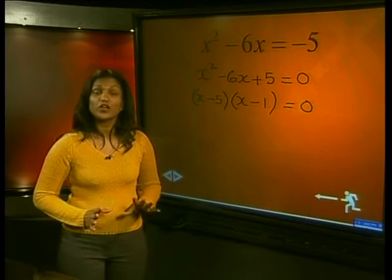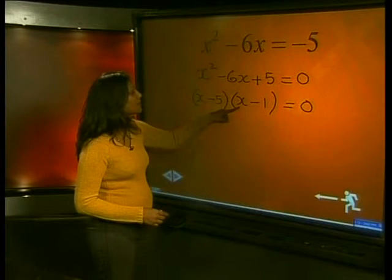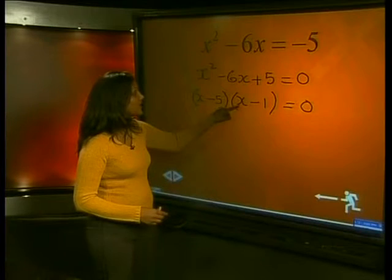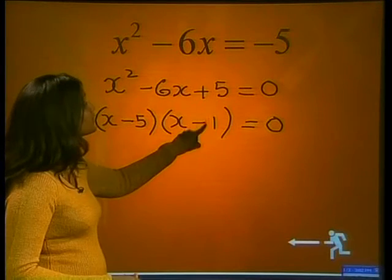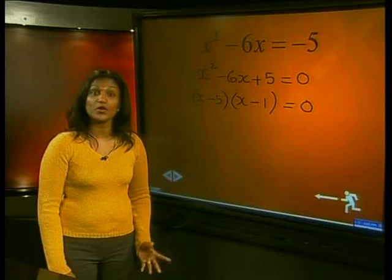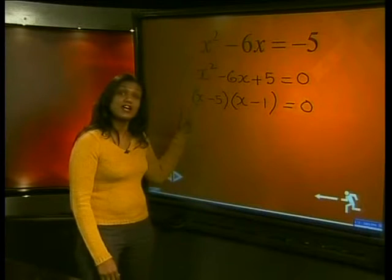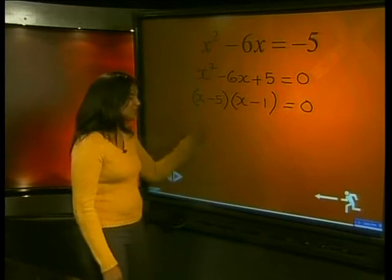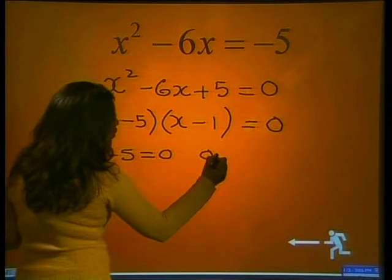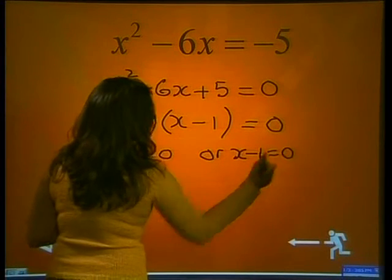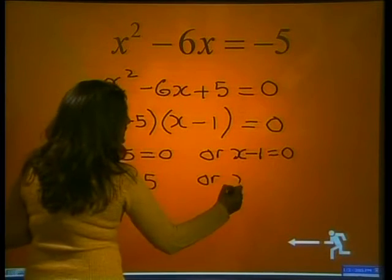You should always check when you've factorized. Multiplying out the brackets: x times x gives x squared; negative 5 times x plus x times negative 1 gives negative 6x; negative 5 times negative 1 gives positive 5. We now have two factors that when multiplied together give 0. So we can write x minus 5 equals 0 or x minus 1 equals 0. This simplifies to x equals 5 or x equals 1.